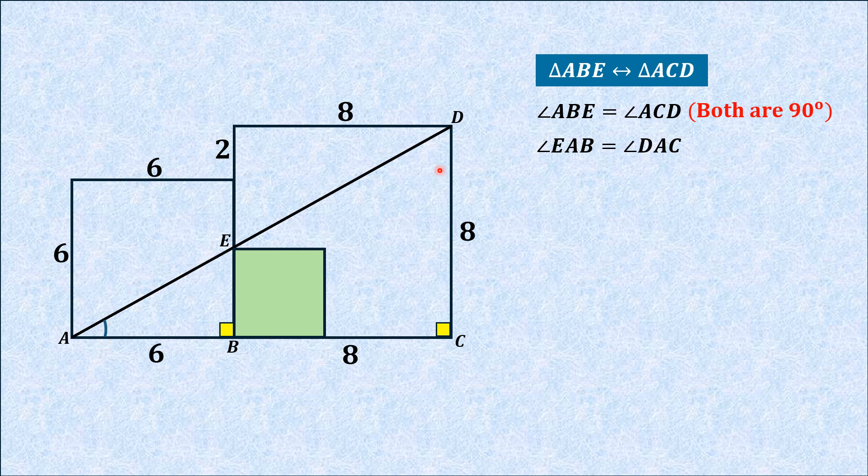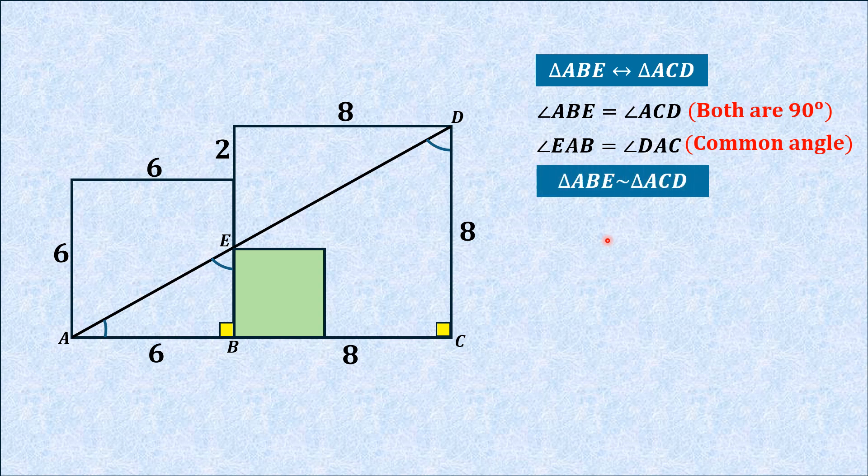This is a common angle in both triangles. Since two angles in each triangle are equal, the third angles at points E and D are also equal to each other. Thus, these two triangles are similar due to angle-angle similarity.